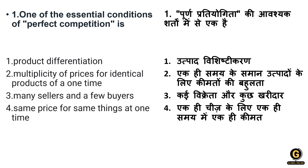This is our first question of today's session: one of the essential conditions of perfect competition is what? There are many conditions for perfect competition, and from the given options — product differentiation, multiplicity of prices from identical products, many sellers and few buyers, and same price for same things at one time — the correct answer is option four: same price for the same things at one time. In perfect competition there are many sellers and many buyers, which is why there is one price for the same things at the same time.